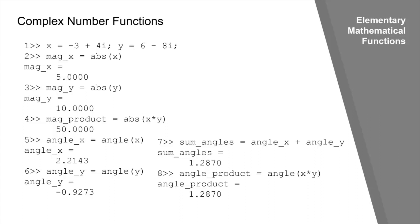The angle of x is found using the angle function: angle(x) = 2.2143 radians, and angle(y) = -0.9273 radians. The sum of these angles is 1.2870. An important point: when x is a vector of real values, abs(x) will not give the geometric length of the vector — that is given by norm(x). Only if x is a complex number representing a geometric vector will abs(x) give its geometric length.